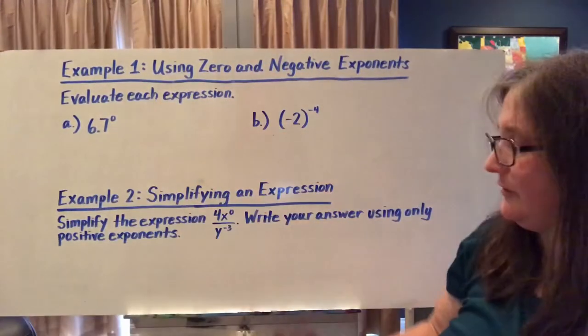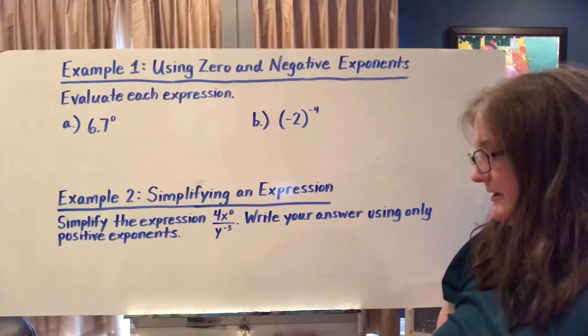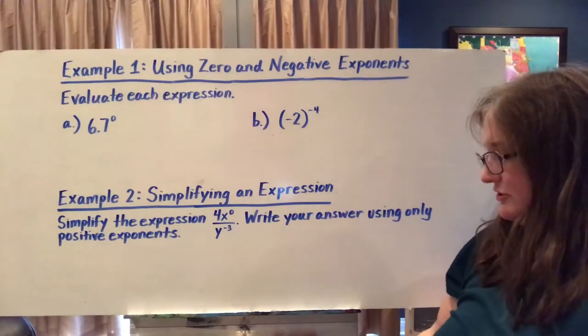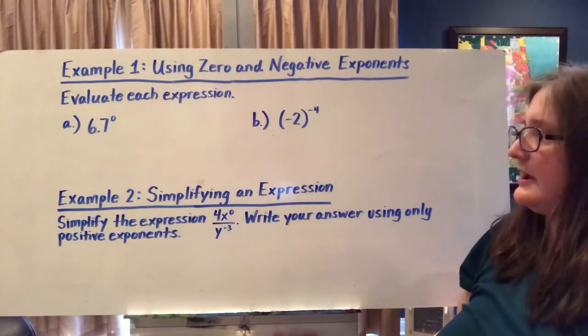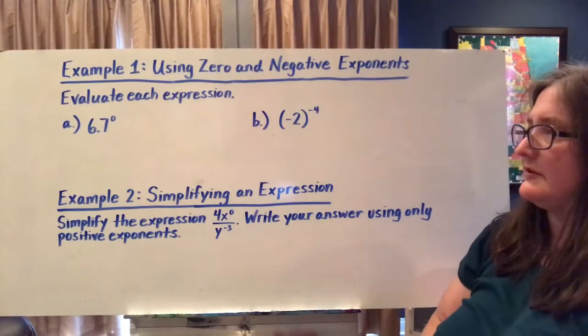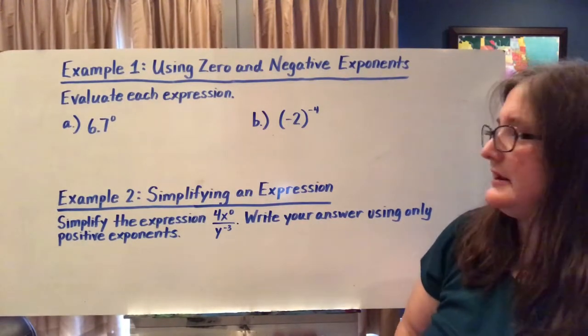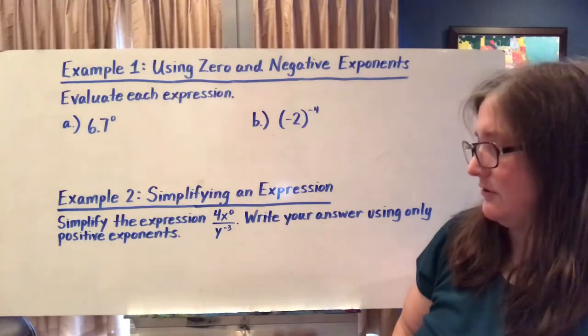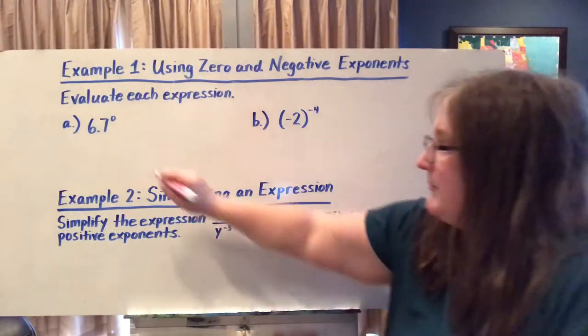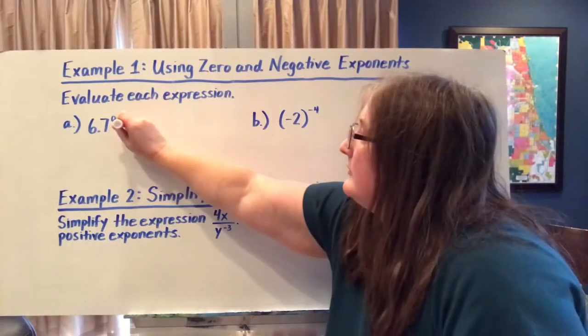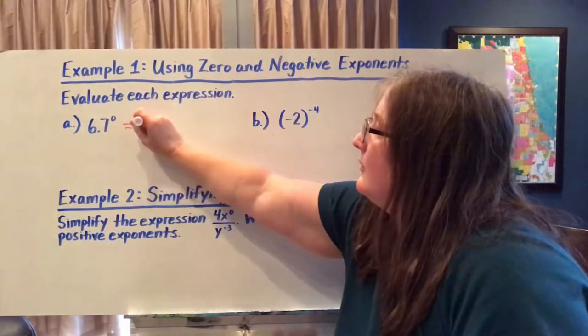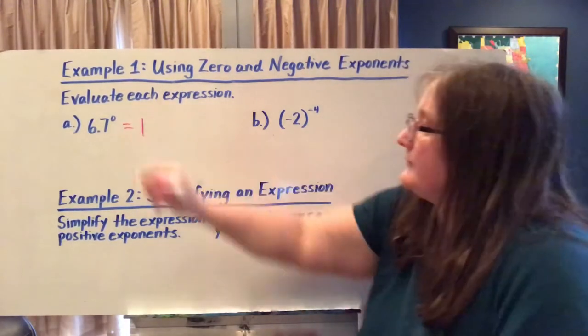So let's try evaluating these expressions. I have six point seven to the zero power. Any non-zero base to the zero power is going to equal one.